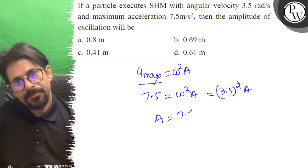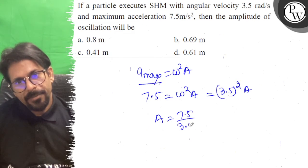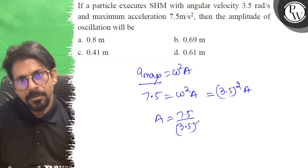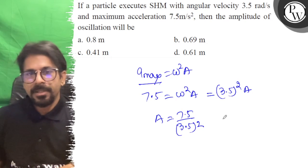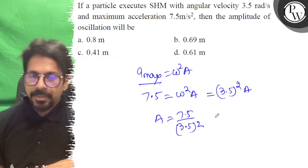So A, which is 7.5 upon 3.5 whole square. So if you think about this, 7.5 then 3.5 whole square is how much?